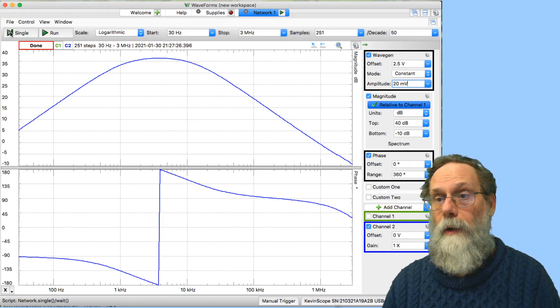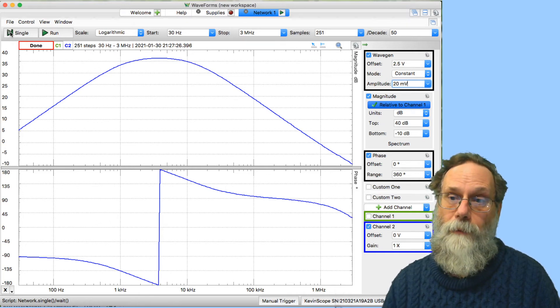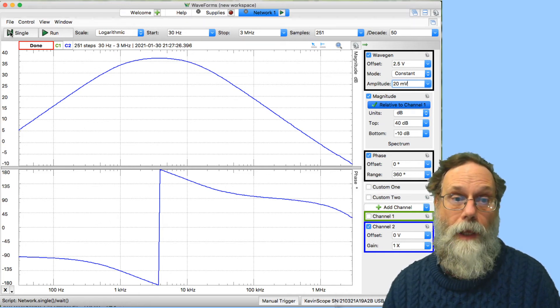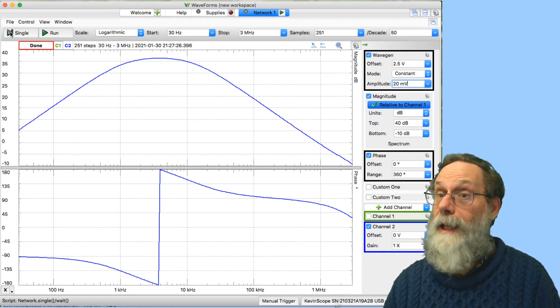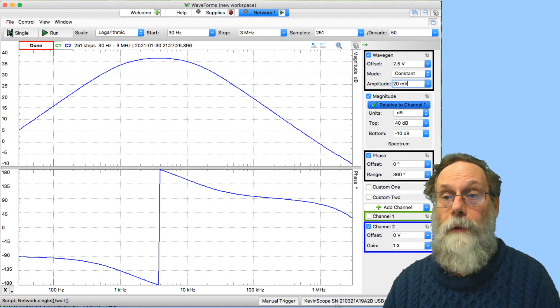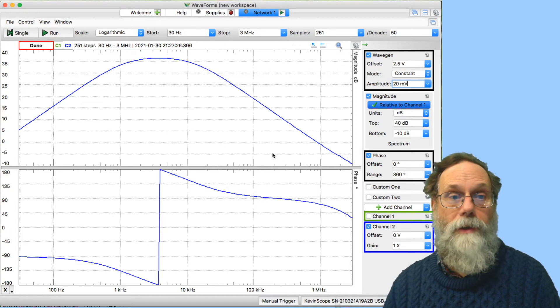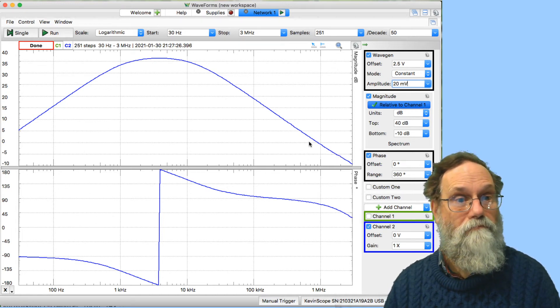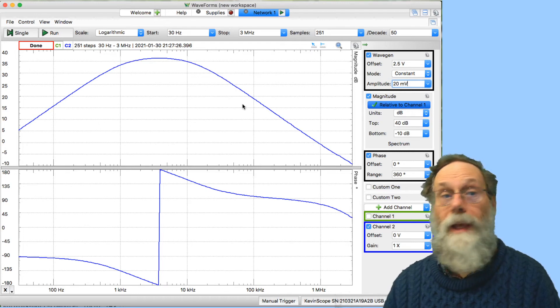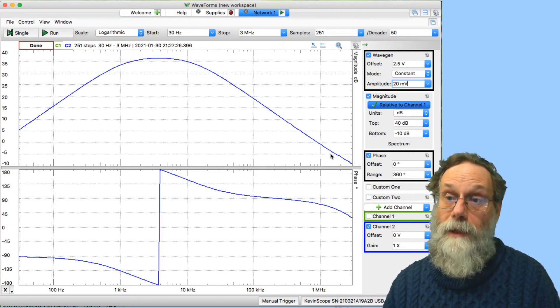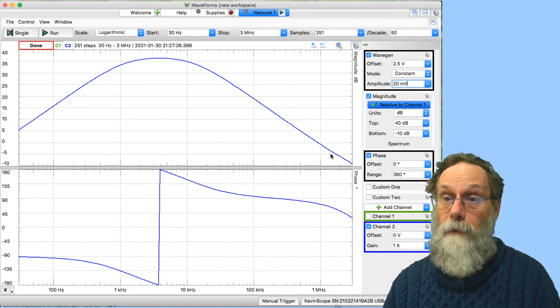I was doing this thing with an MCP6004 op-amp chip, and those have a gain bandwidth product of only 1 megahertz. If you take a look at where this is coming back down to 0 dB, it's about 1 megahertz. This downward slope that you're seeing here is due to the gain bandwidth limitations of the op-amp.